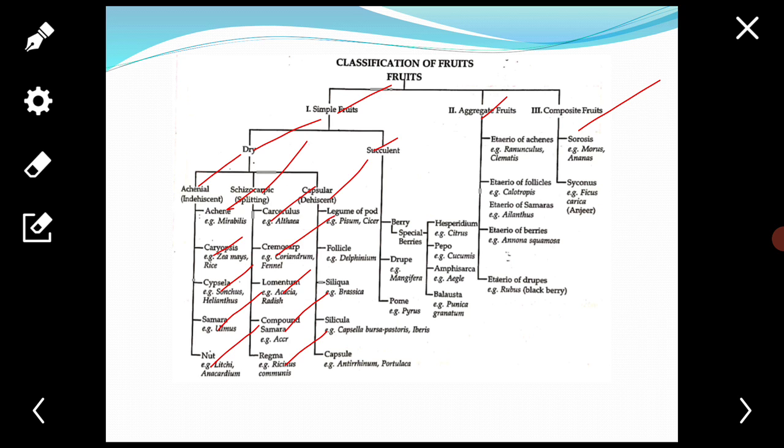Next, compound samara. The samara splits at maturity into two or three single seeded indehiscent and winged mericarps.